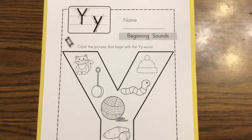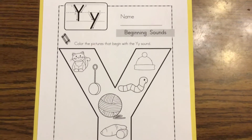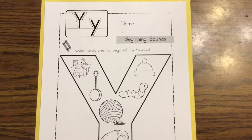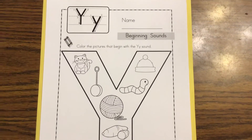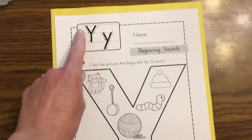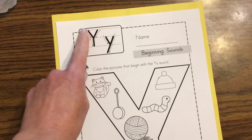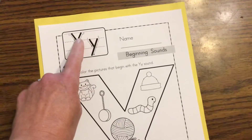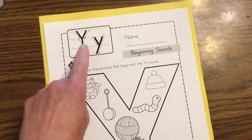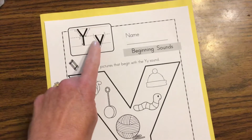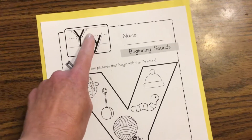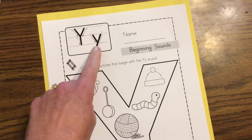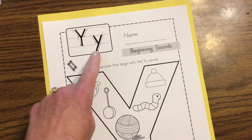Let's talk about the letter Y some more. What sound does Y make? Yuh. You'll see our Y up here. Slant down, slant down, pull down. Our lowercase Y: slant down, slant down all the way.